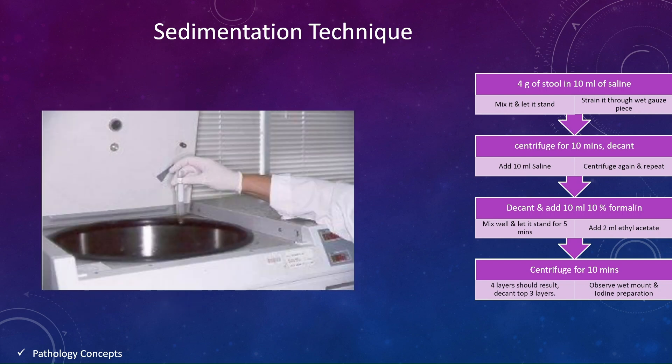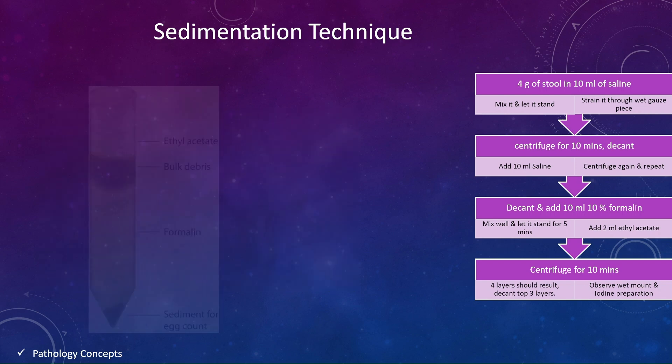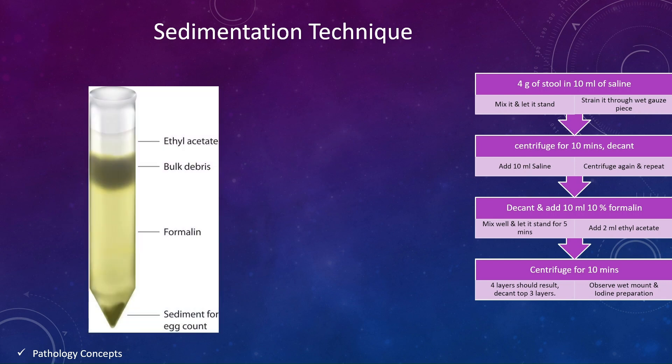Centrifuge for 10 minutes. After centrifugation, 4 layers should develop. Decant the top 3 layers and observe wet mount and iodine preparation from the sediment. The uppermost layer is ethyl acetate, then the layer of debris, then the layer of formalin, and lastly the layer of sediment.